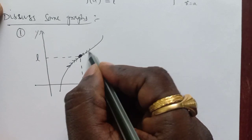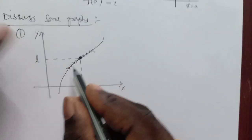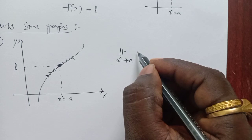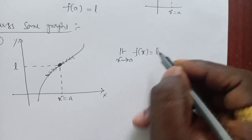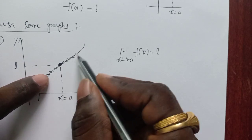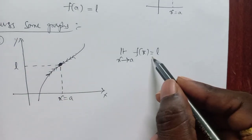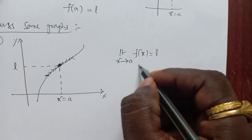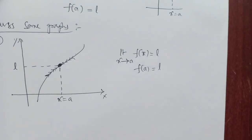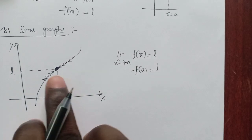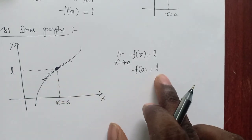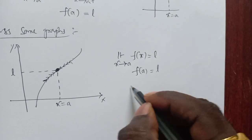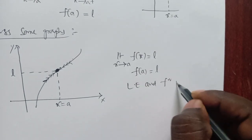From both sides the graph approaches l, which means the limit exists and equals l. The left limit and right limit both approach the same value l, so limit as x tends to a of f(x) equals l. And the value of the function at x equal to a is also f(a) equals l. Both are equal, so the limit exists and the function is continuous.